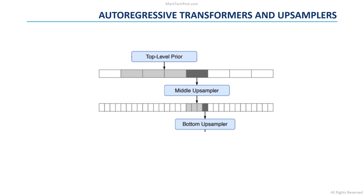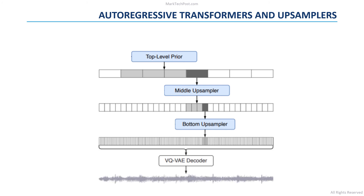Then, each of the upsamplers change the temporal resolution of the sequence. The sequence obtained in this way can be given to the decoder of the bottom-level variational autoencoder to generate the final audio sample.